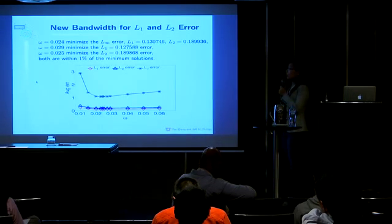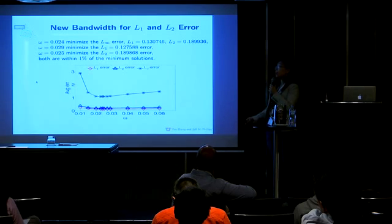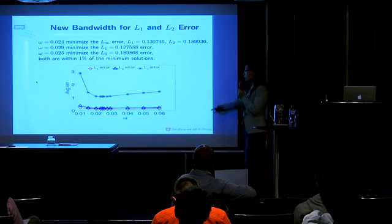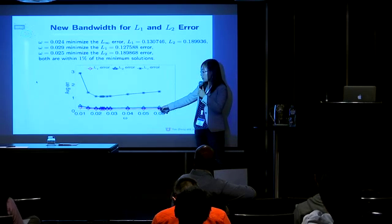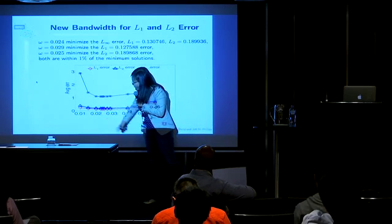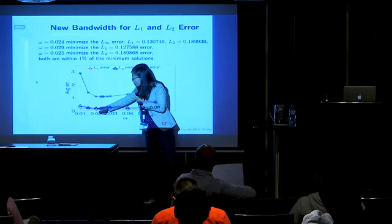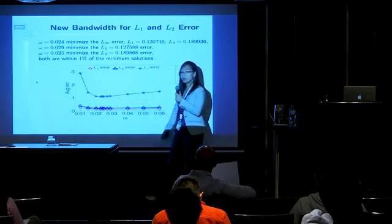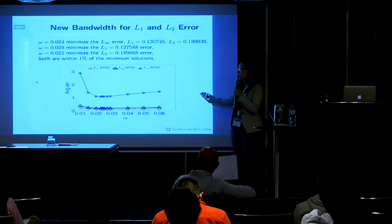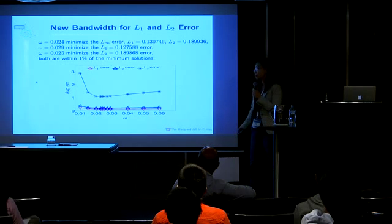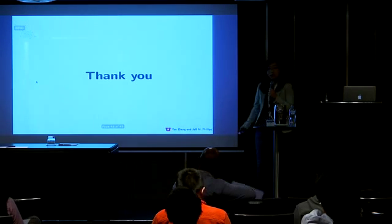Our method also works for L1 and L2 error. The blue and red curves show that the points found for lowest L1 and L2 norm are always similar to those found under L-infinity error. So L-infinity error can also bound the L1 and L2 norm. That's all — thank you so much.